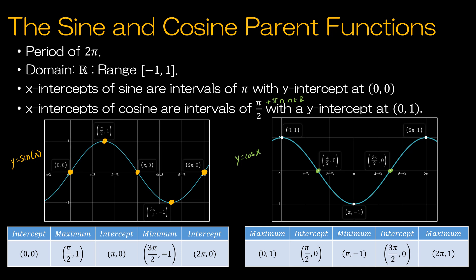For cosine, because it begins on the y-intercept, not at the x-axis, we're going to start with a maximum, and then we have an intercept at π over 2 comma 0, and then we have a minimum of π comma negative 1, and then back up to another intercept, and then it's back to a maximum. So because the period began with a maximum, it also ended with a maximum. So those are our two functions, and in the following pages we're going to take a look at the general function and what all of the transformations we can do for sine and cosine.